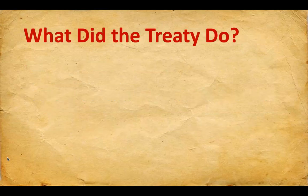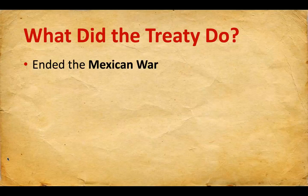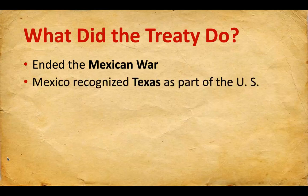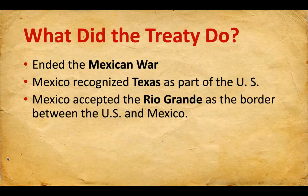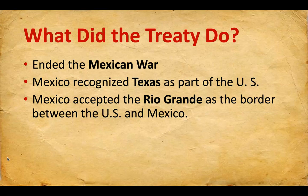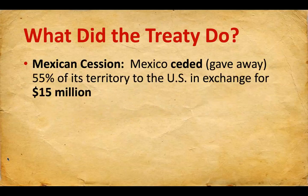Now, the Treaty of Guadalupe Hidalgo — what did the treaty do? It ended the Mexican War. Mexico recognized Texas as part of the U.S., no longer claiming Texas as part of Mexico. Mexico accepted that the Rio Grande was the border between the United States and Mexico, and it gave the United States the Mexican Cession. Mexico ceded, or gave away, about 55 percent of its territory to the United States in exchange for 15 million dollars.